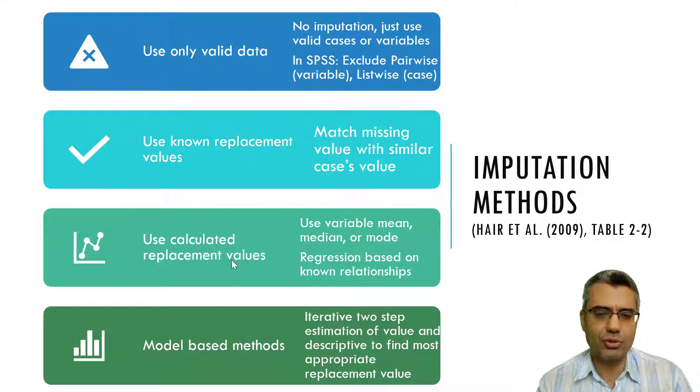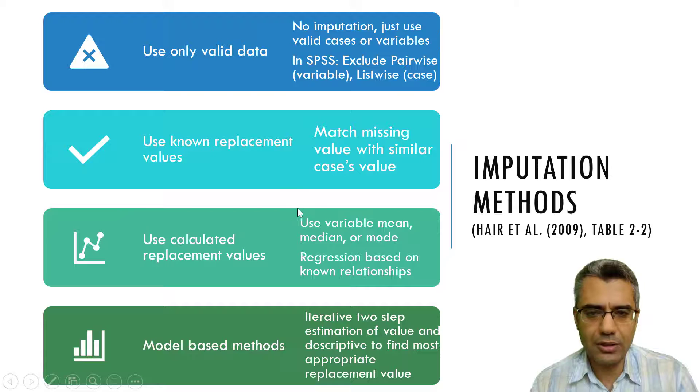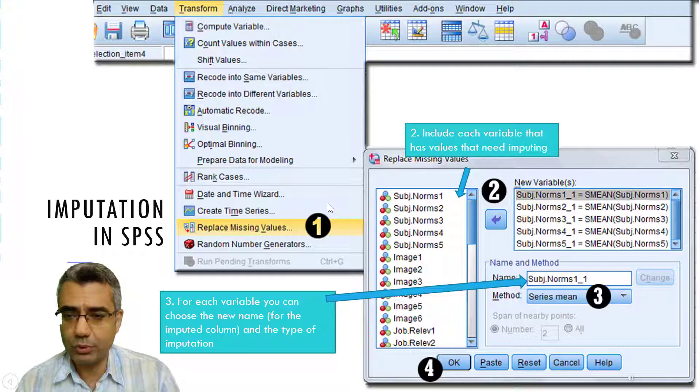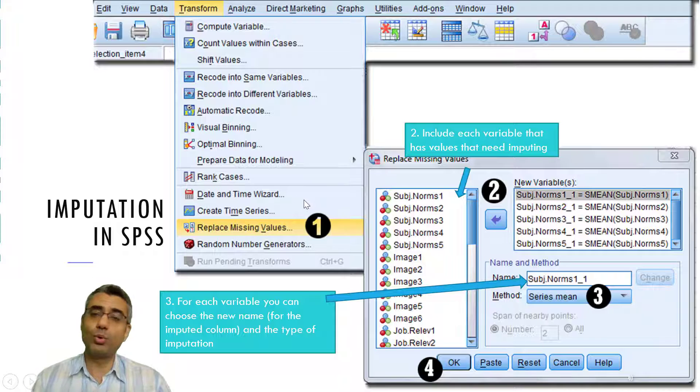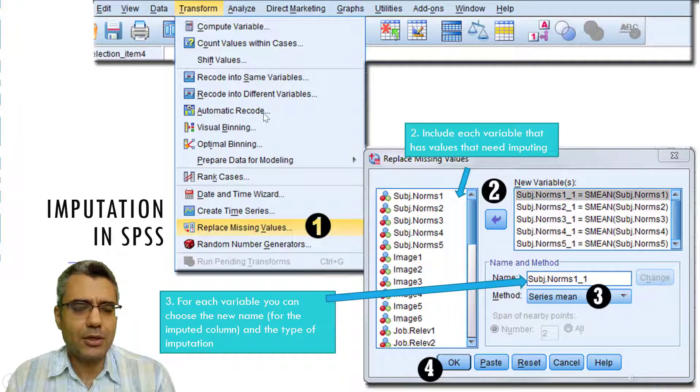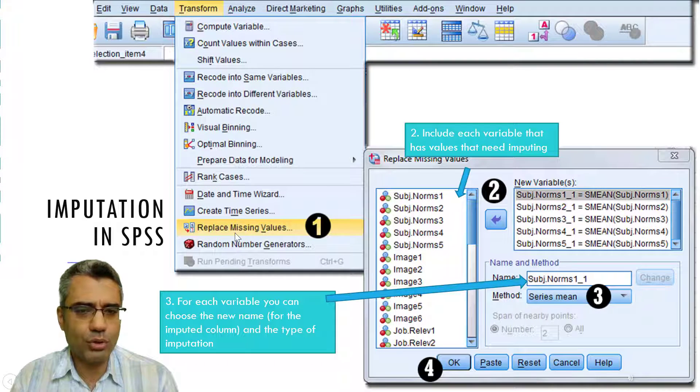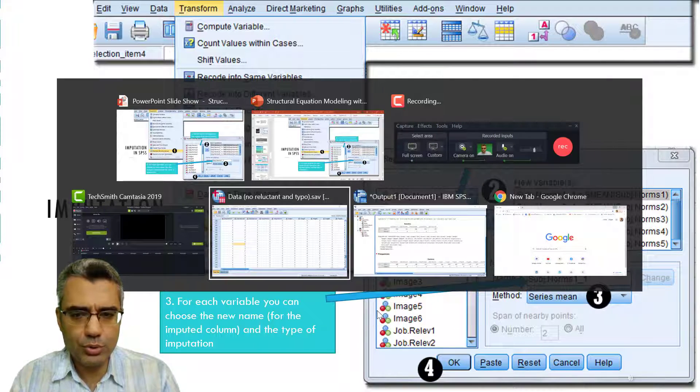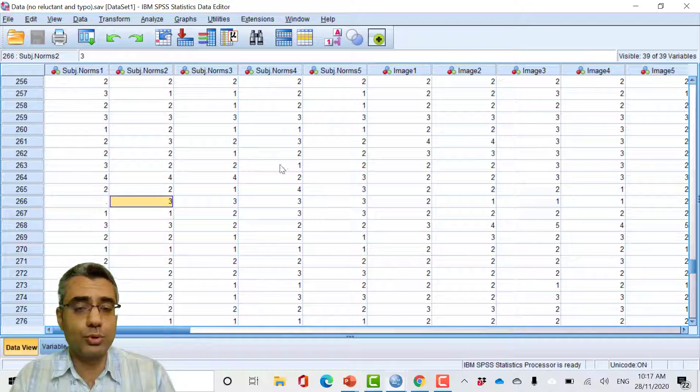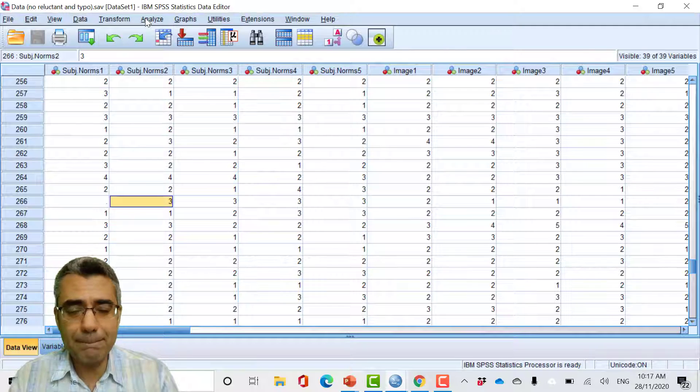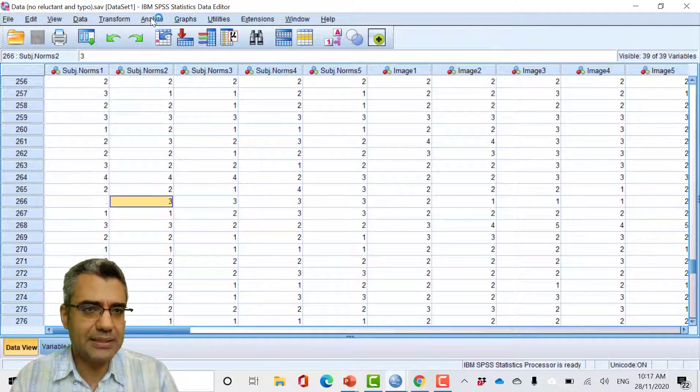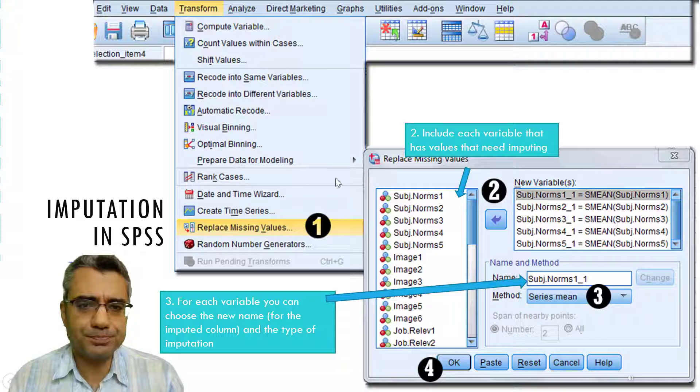There is another method, model-based methods, but they are not available in many statistical software packages. If you want to know more about it you can Google, there is a lot about it. Here I want to show you the most commonly used method that I told you I usually use when I don't have many missing cases. This is SPSS, you go to Transform, Replace Missing Values.